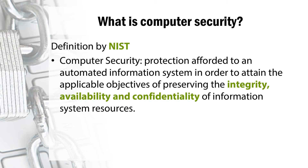Lastly, we have availability, which means that information data should be available to authorized users upon request. While these are just basic concepts, nowadays they are considered almost not enough to design the complex security requirements that modern internet and information systems require. Additional requirements that you might see in the textbook will be adaptation, authenticity, and accountability. In this discussion, we will only focus on the three basic concepts of integrity, availability, and confidentiality.